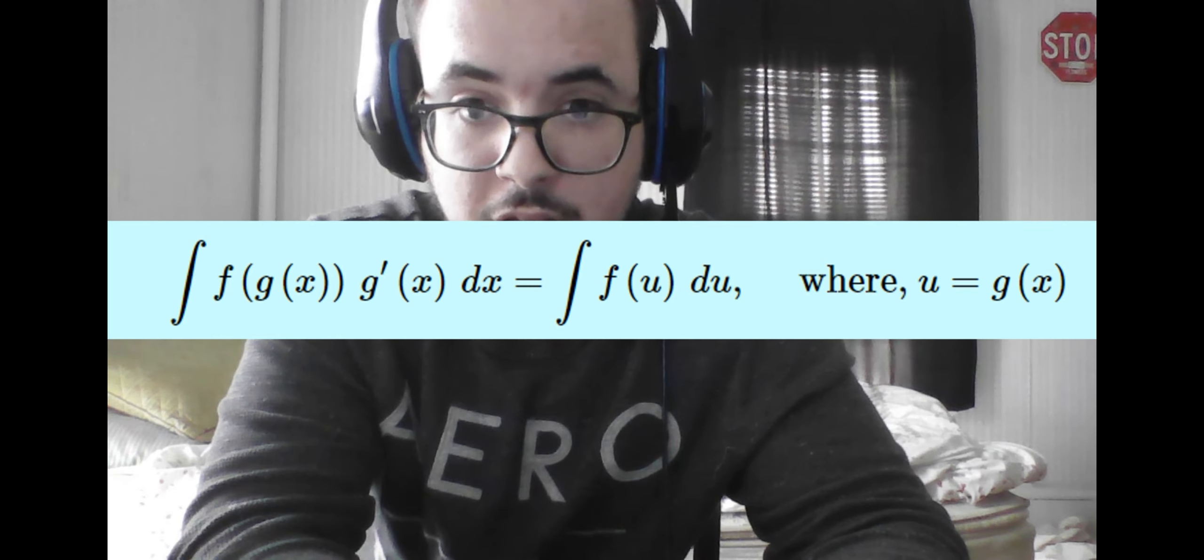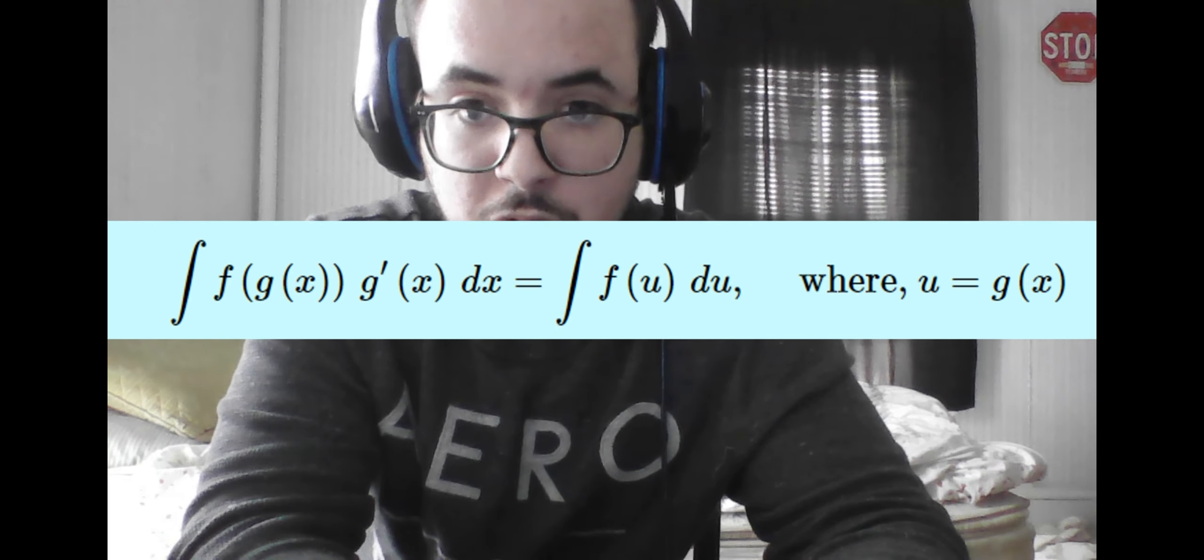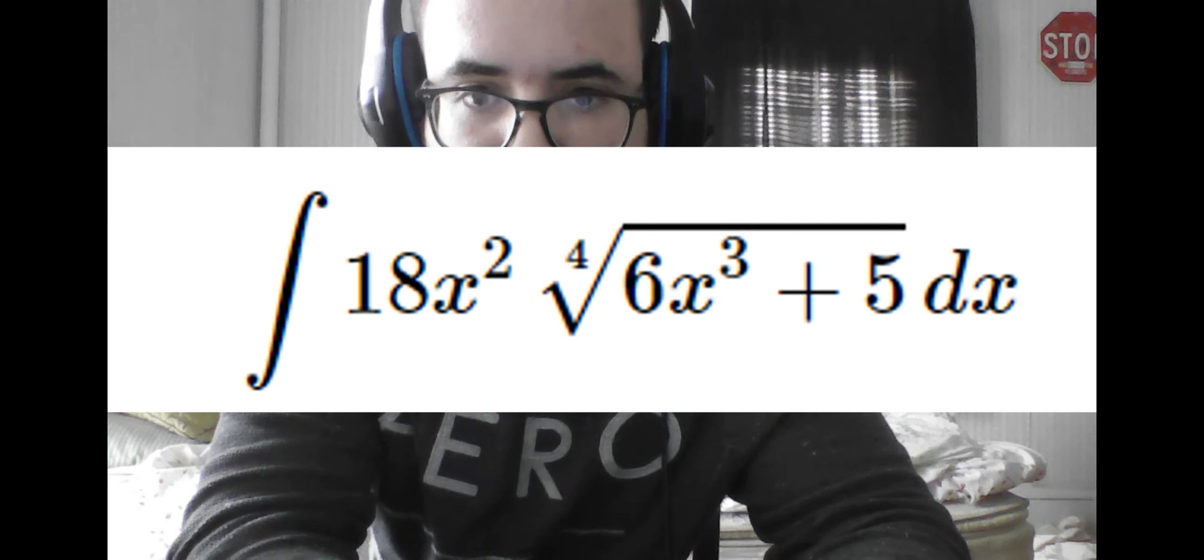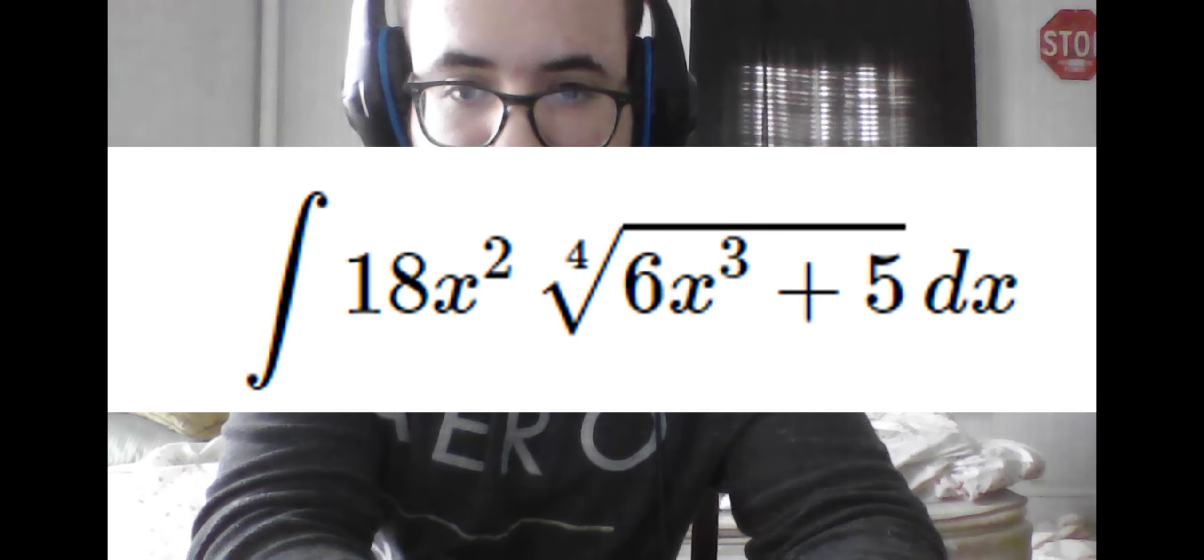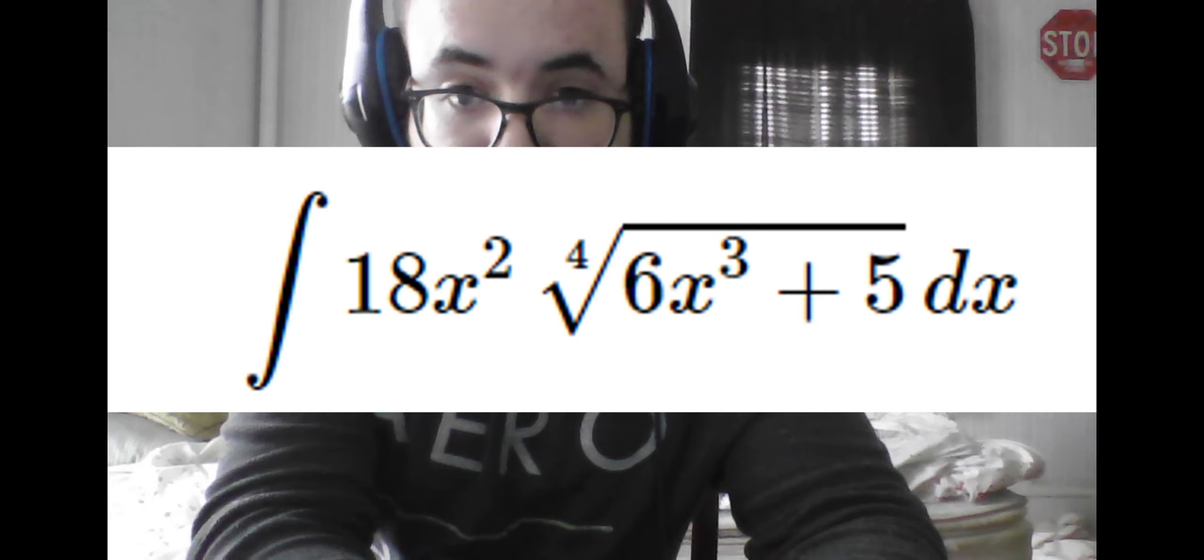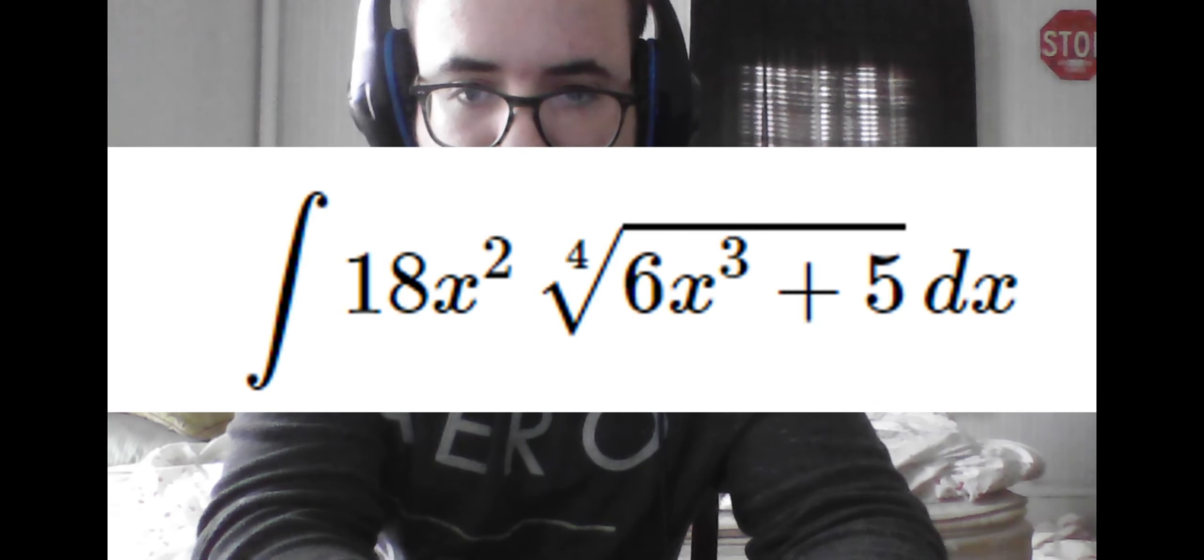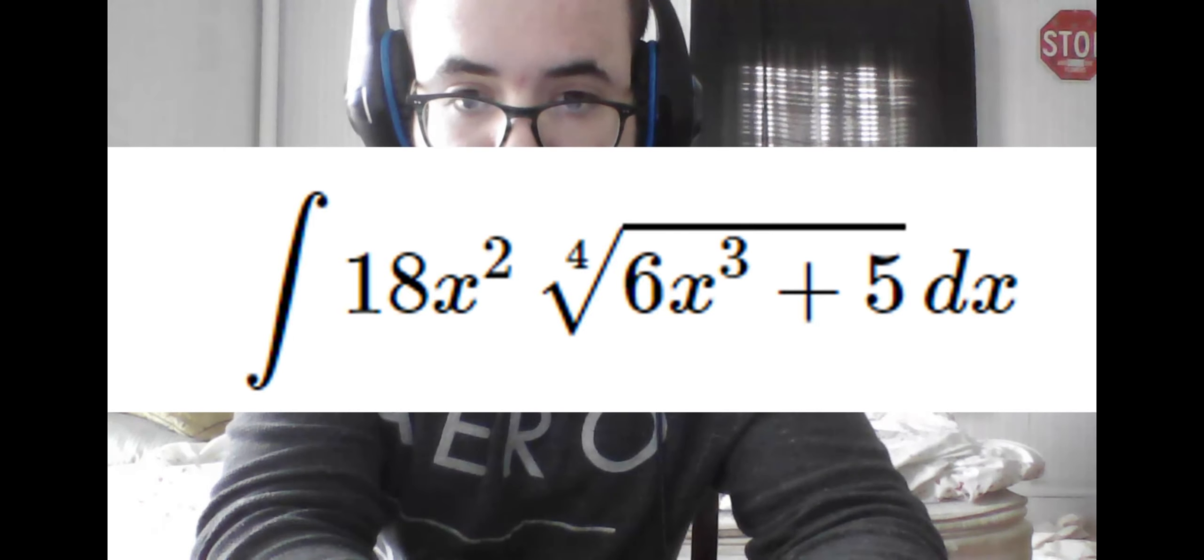With that out of the way, if we are given an integral like this, we would correctly identify the inner function as 6x cubed plus 5. So now if we take the derivative of this function u with respect to x, we should come up with 18x squared. But now we multiply this derivative by the change in x.